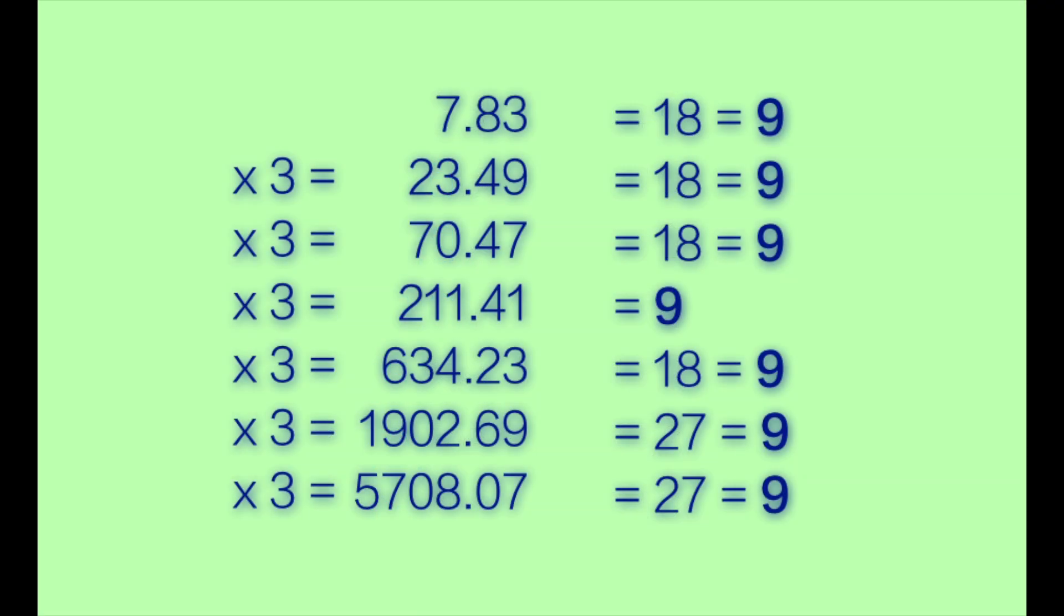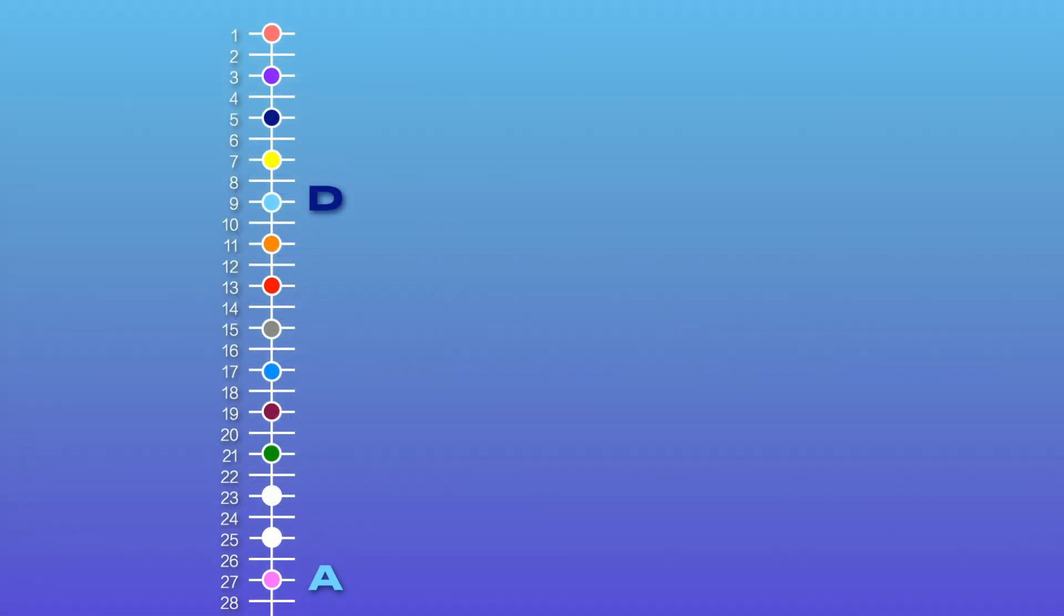Tripling 7.83, we see the values still all reduce to 9, but the last two get there not through the value of 18, the note of D, but through 27, the note of A.